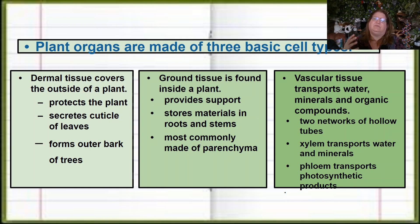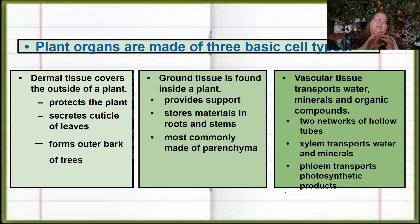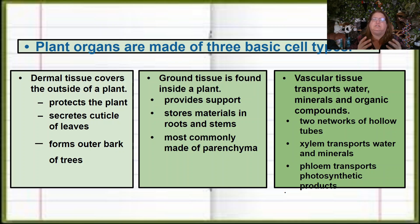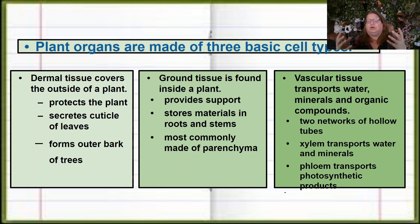We also have three different types of tissues in plants. Dermal tissue will sound familiar because we have the epidermis of our skin — so dermal tissue covers the outside of the plant. You have the waxy cuticles of a lot of leaves or the bark. Ground tissue is found inside a plant and, just like parenchyma, it's doing a lot of the business of the plant: metabolic processes, photosynthesis, storage, and converting molecules.